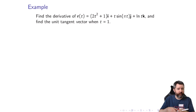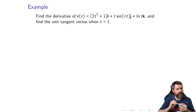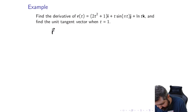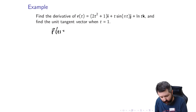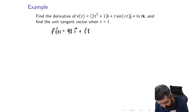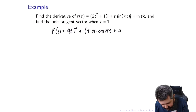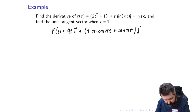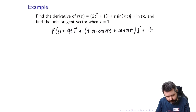Example: find the derivative of the vector function r(t) = (2t²+1)i + (t sin πt)j + (ln t)k, then find the unit tangent vector when t=1. For r'(t), take the derivative of each component. The derivative of 2t²+1 is 4t, giving 4t·i. For t sin(πt), use the product rule: t·(π cos πt) + sin(πt)·1, giving that expression times j. The derivative of ln t is 1/t, giving (1/t)k.